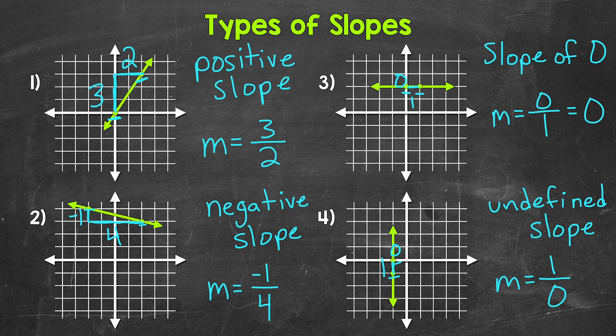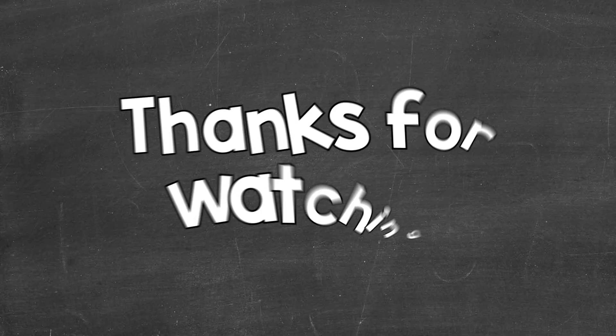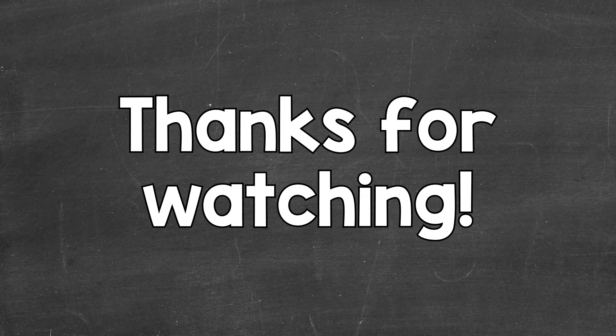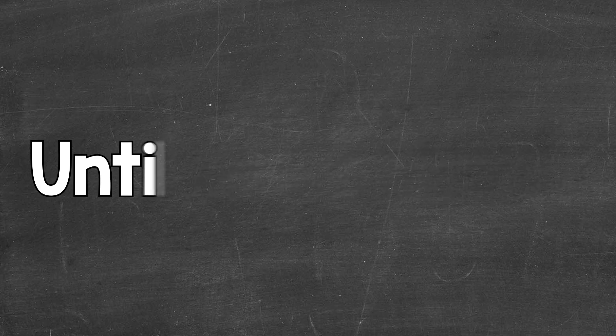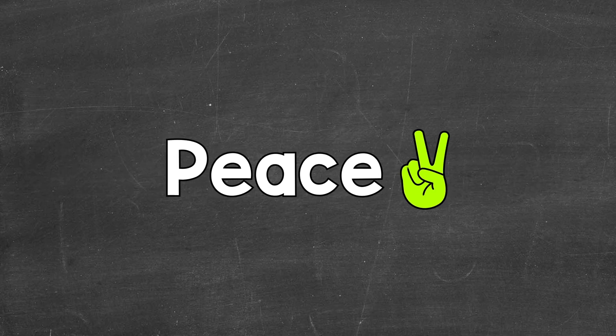So there you have it — there are the four types of slope: positive, negative, zero, and undefined. I hope that helped. Thanks so much for watching. Until next time, peace.